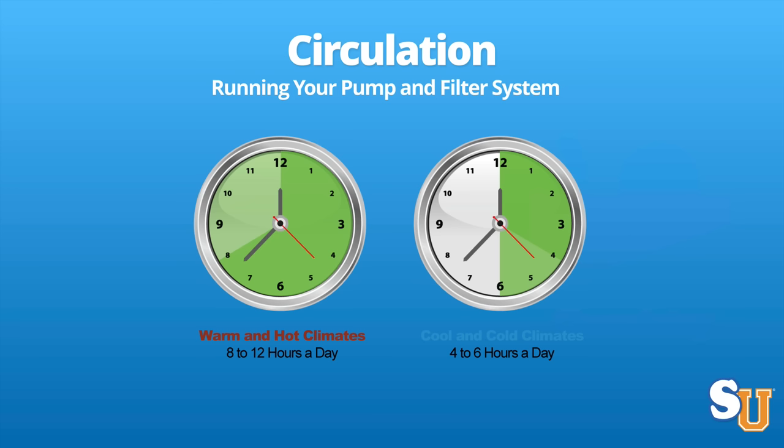Your pool should be constantly circulating water, but that's just not realistic. So I recommend that in the summer when it's hot, you run it eight to twelve hours a day — closer to twelve hours a day would be great. If it's colder and you keep your pool open all year long, you can run it about four to six hours a day. If you have a variable speed pump, you may be able to drop it to a lower speed, keep it running all the time, and actually save yourself some money.